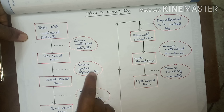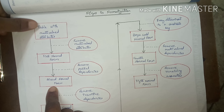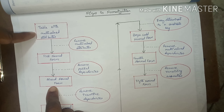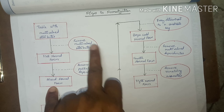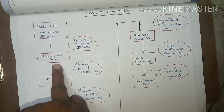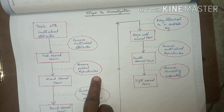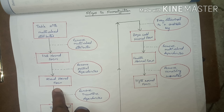First Normal Form: remove partial dependencies, then we will get the table into Second Normal Form. So starting from a table with multi-valued attributes, remove the multi-valued attributes to get First Normal Form, then remove partial dependencies to get Second Normal Form.